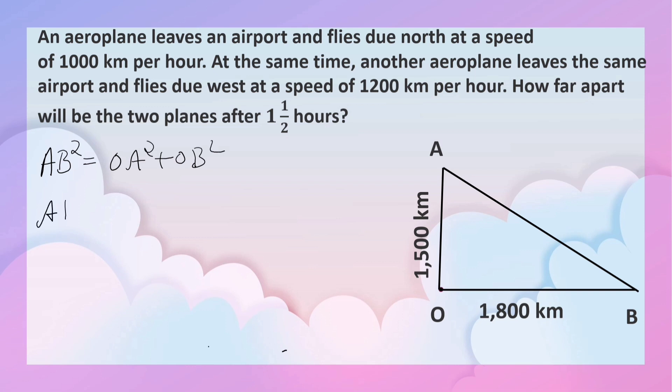We can calculate AB by taking the square root of OA square plus OB square. Let us now substitute the values. OA is 1500, OA square is 1500 square. OB is 1800, OB square is 1800 square.